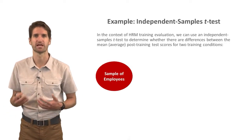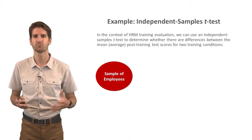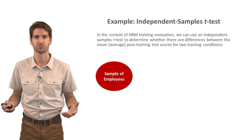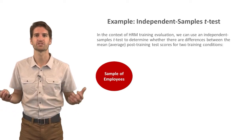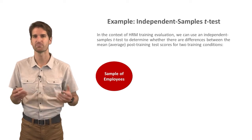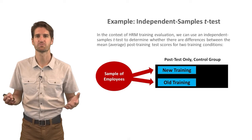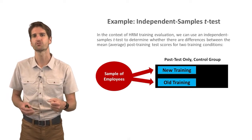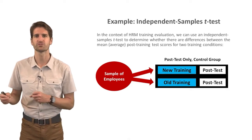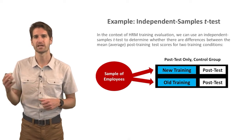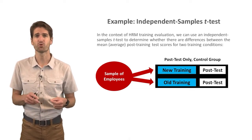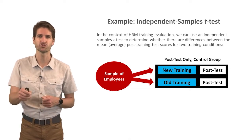Let's walk through an example. In human resource management, training evaluation is important — we want to evaluate whether a training actually improved the intended outcomes. We can use an independent samples t-test to determine whether there are differences between mean post-training test scores for two training conditions. Imagine a sample of employees randomly assigned to either a new training group or an old training group. This is a post-test only with control group design — they go through their respective training and then everyone takes a post-test assessing the outcome the new training was supposed to improve.